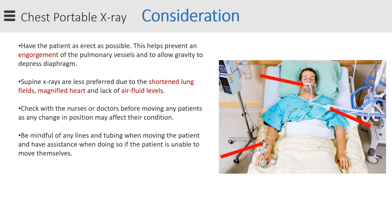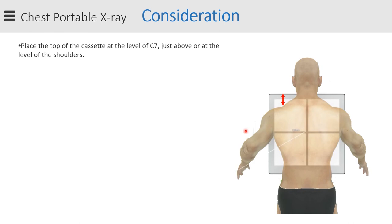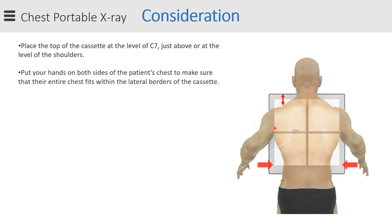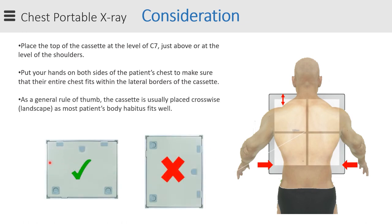Have assistance when moving patients if they are unable to move by themselves. One of the challenges in portable chest x-ray is positioning the cassette. To ensure you are including the apex of the lungs, the superior border of the cassette should be at the level of C7, just above or at the level of the shoulders. Place your hands on both sides of the patient's chest to confirm the entire chest fits within the lateral borders of the cassette. As a general rule, the cassette is usually placed crosswise or landscape, as most patients' body habitus fits well this way.